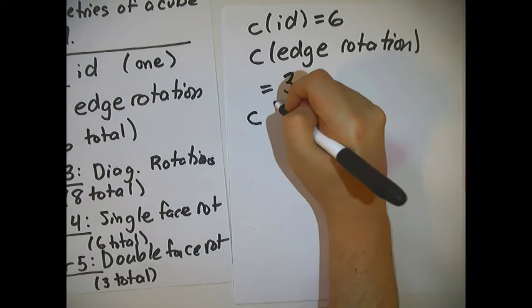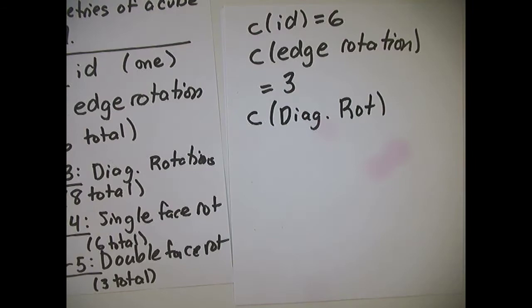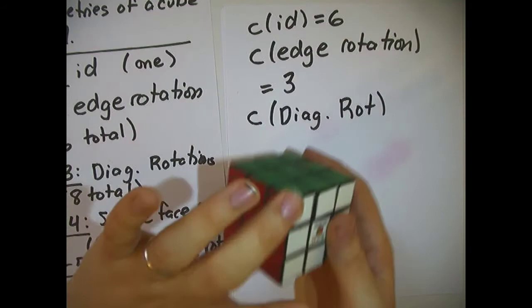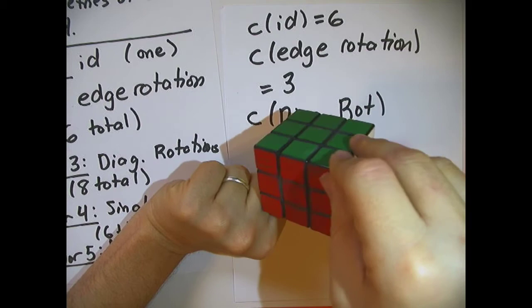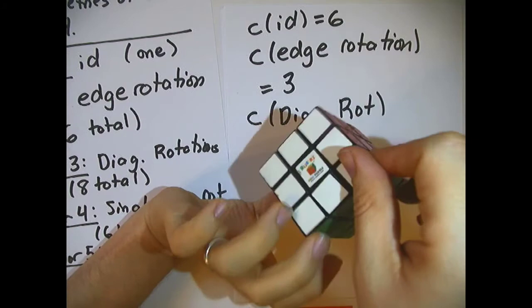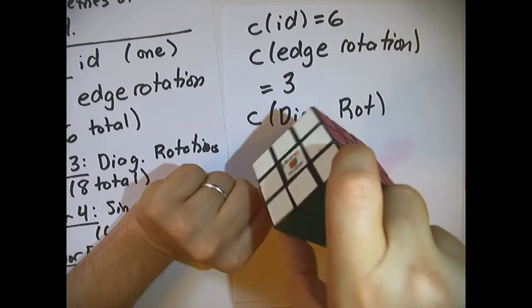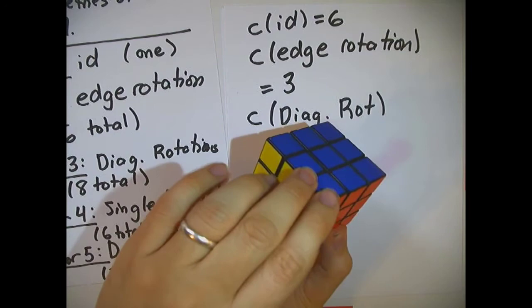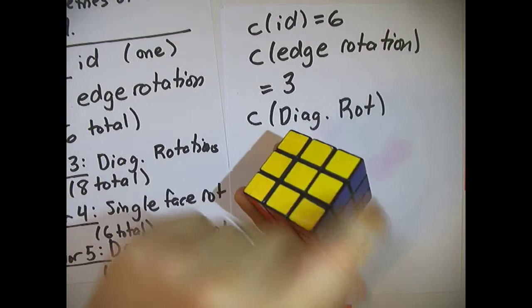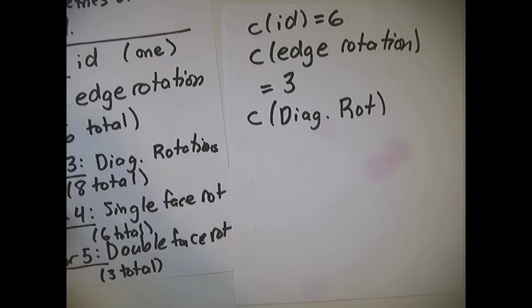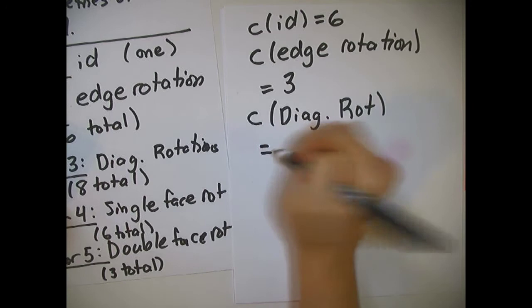For the diagonal rotation: rotating around the corner-to-corner diagonal, the three top faces — the white, red, and green faces — all cycle among each other and form one orbit. Likewise, the three bottom faces — the yellow, blue, and orange faces — cycle among each other and form another orbit. So the cycle number for a diagonal rotation is two.